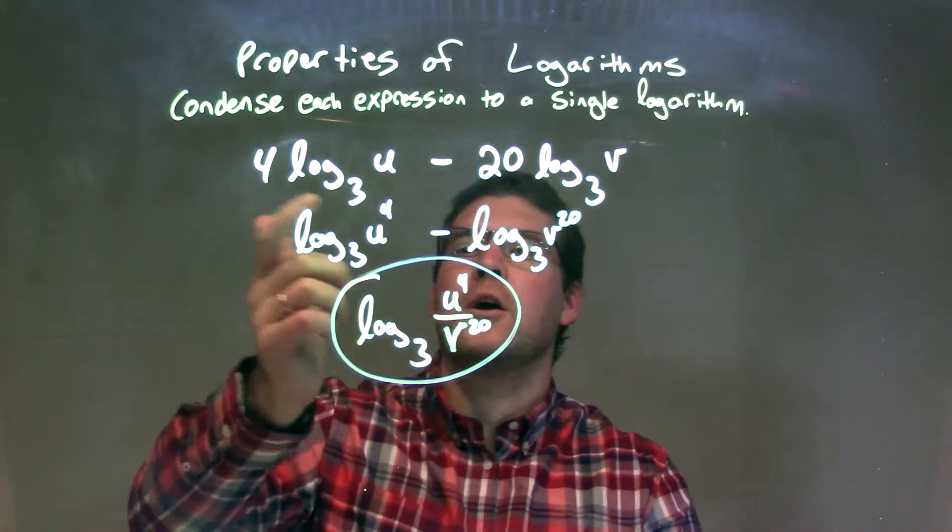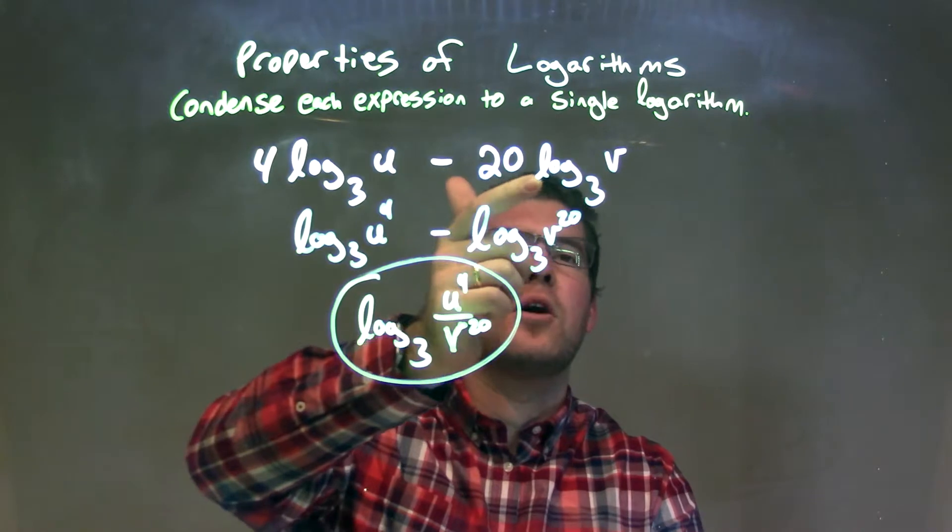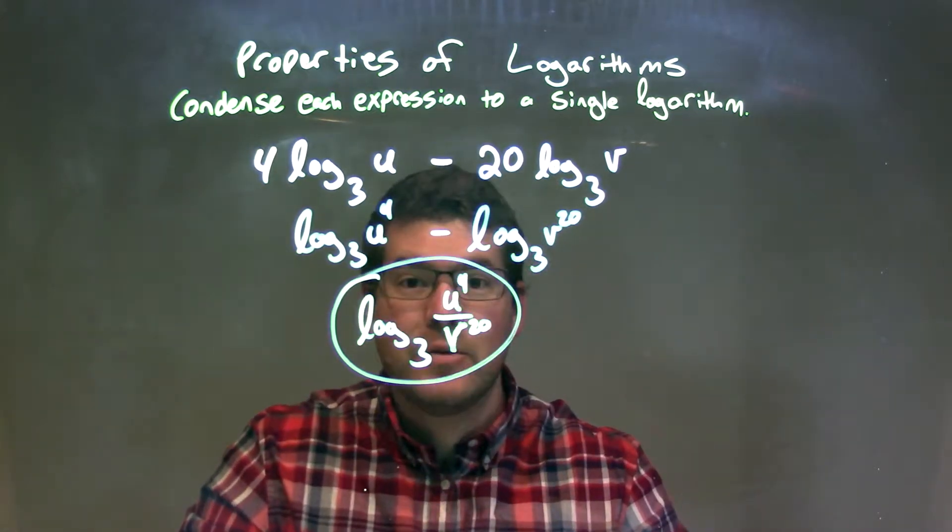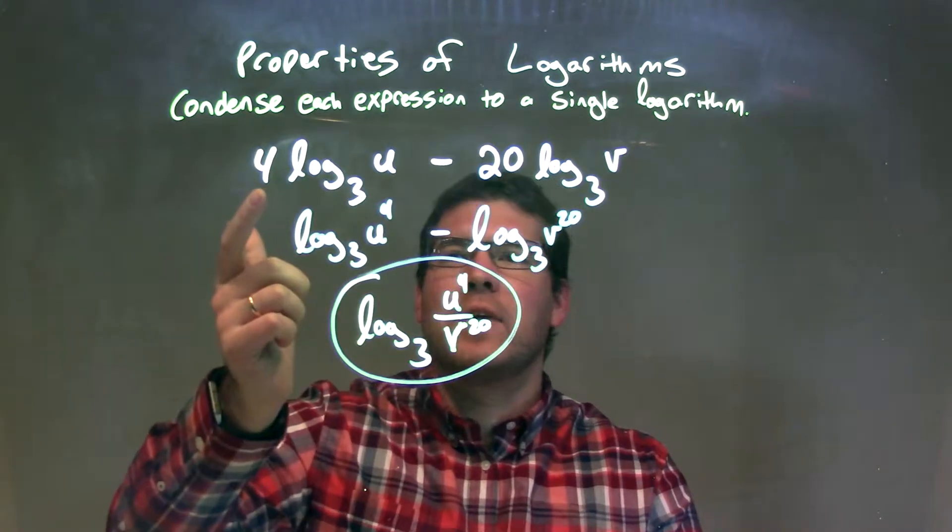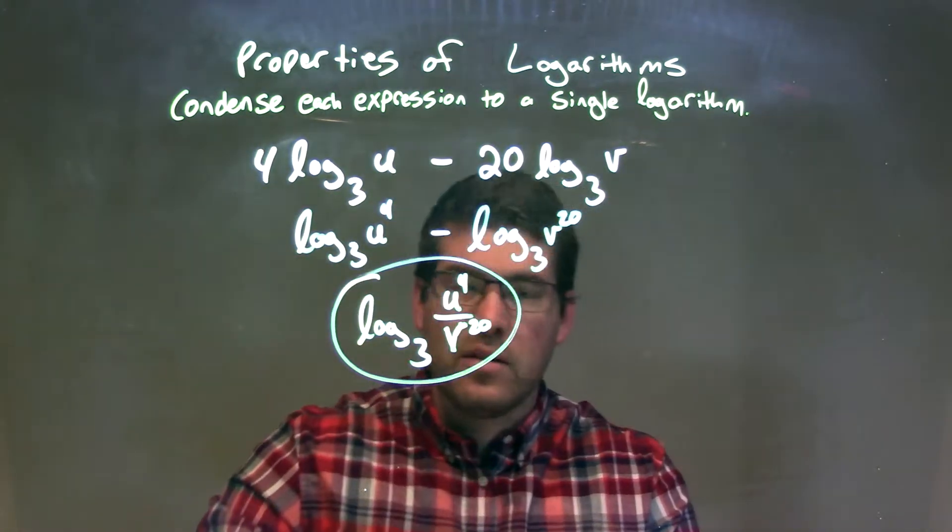So let's recap. We're given 4 log base 3 of u minus 20 log base 3 of v. And when I condense that, the numbers out in front of each one of the logs, I can write as the exponent of the variable inside of the log.